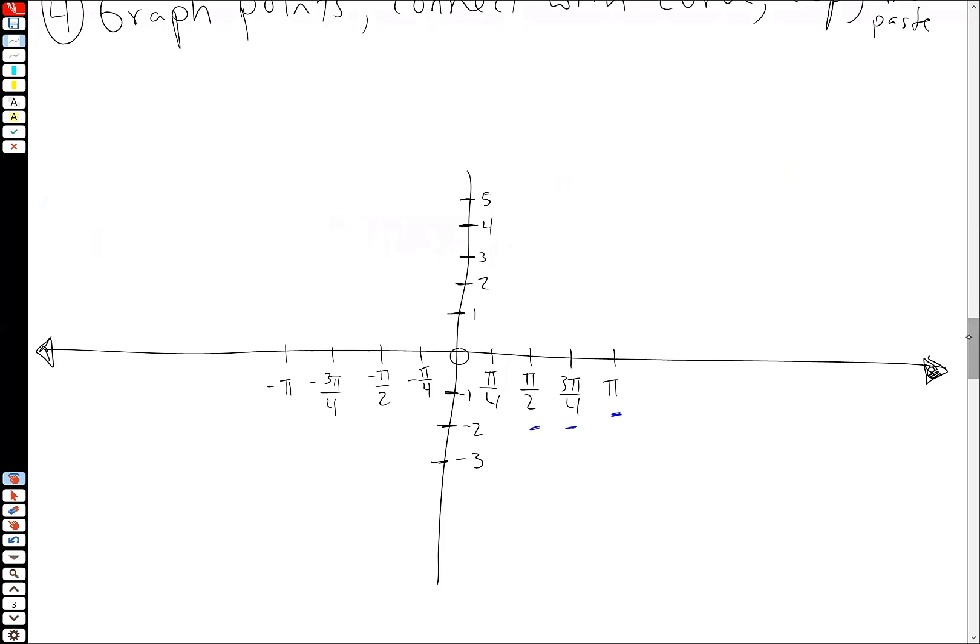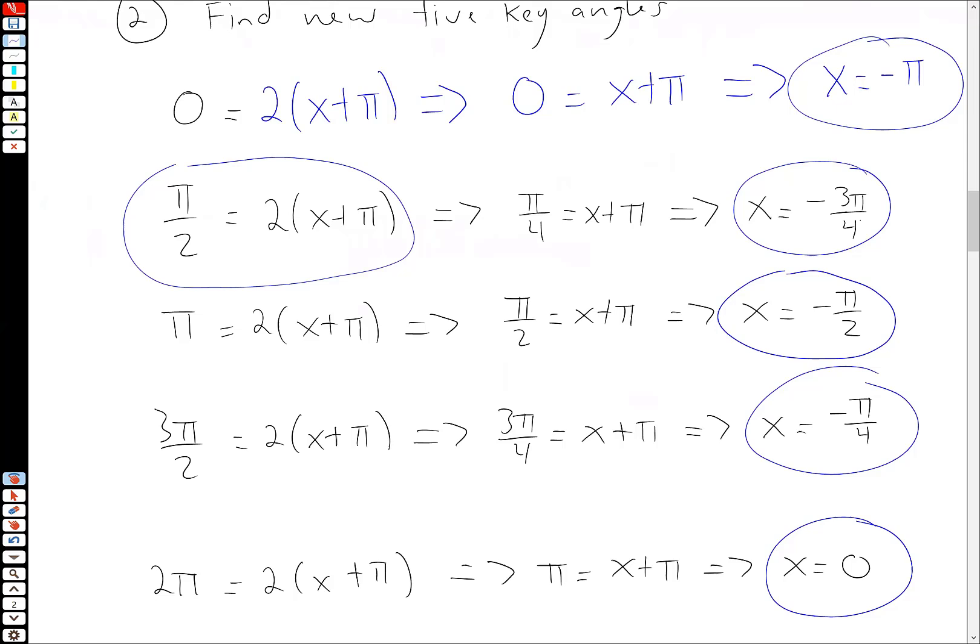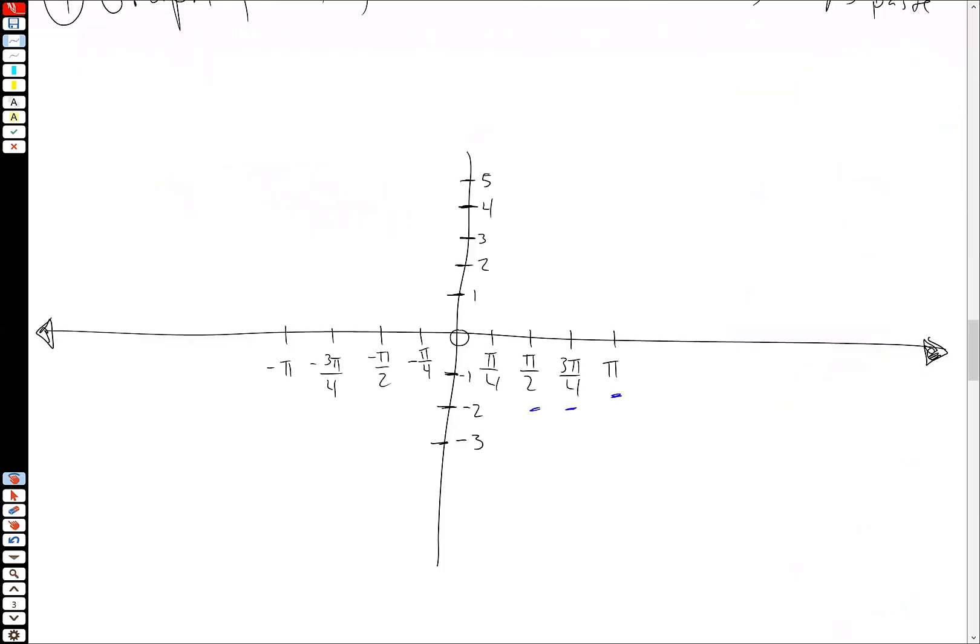And notice each tick mark here is representing π over 4. And the way I got that, if we look at our old key angles, I'm sorry, when you look at your new key angles, let your tick marks be π over the biggest denominator that you see. That's usually a good rule of thumb for that. So that's what I did here. We'd add π over 4. So each tick mark is technically π over 4. In any case, our first point minus π minus 3. So this function is going to start like this.